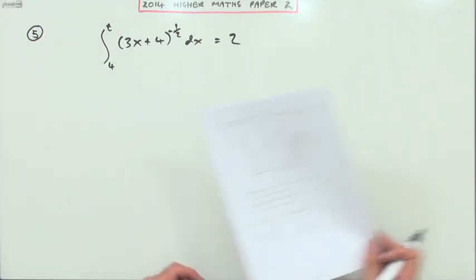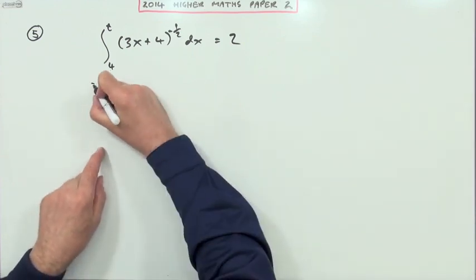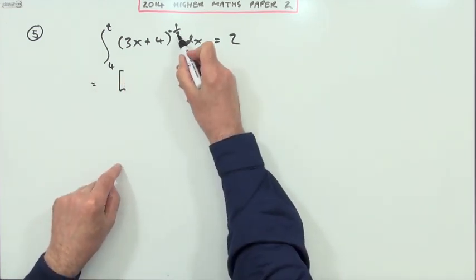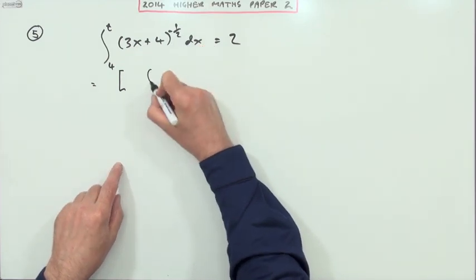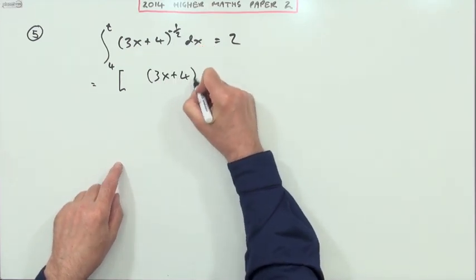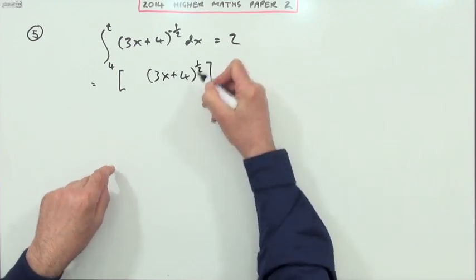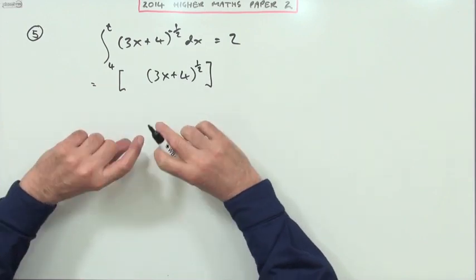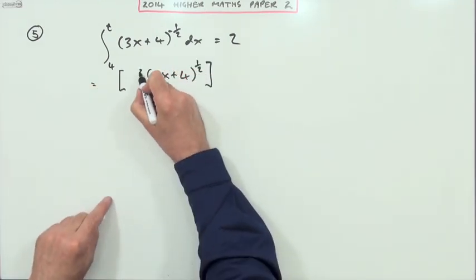So that'll be: add one to the power, giving 3x plus 4 to the power of a half. Divide by that power - divide by a half, but rather than divide by a half, I'd rather multiply by the reciprocal, so that's times 2 over 1. And not forgetting it was a function of a function - a linear function - you divide